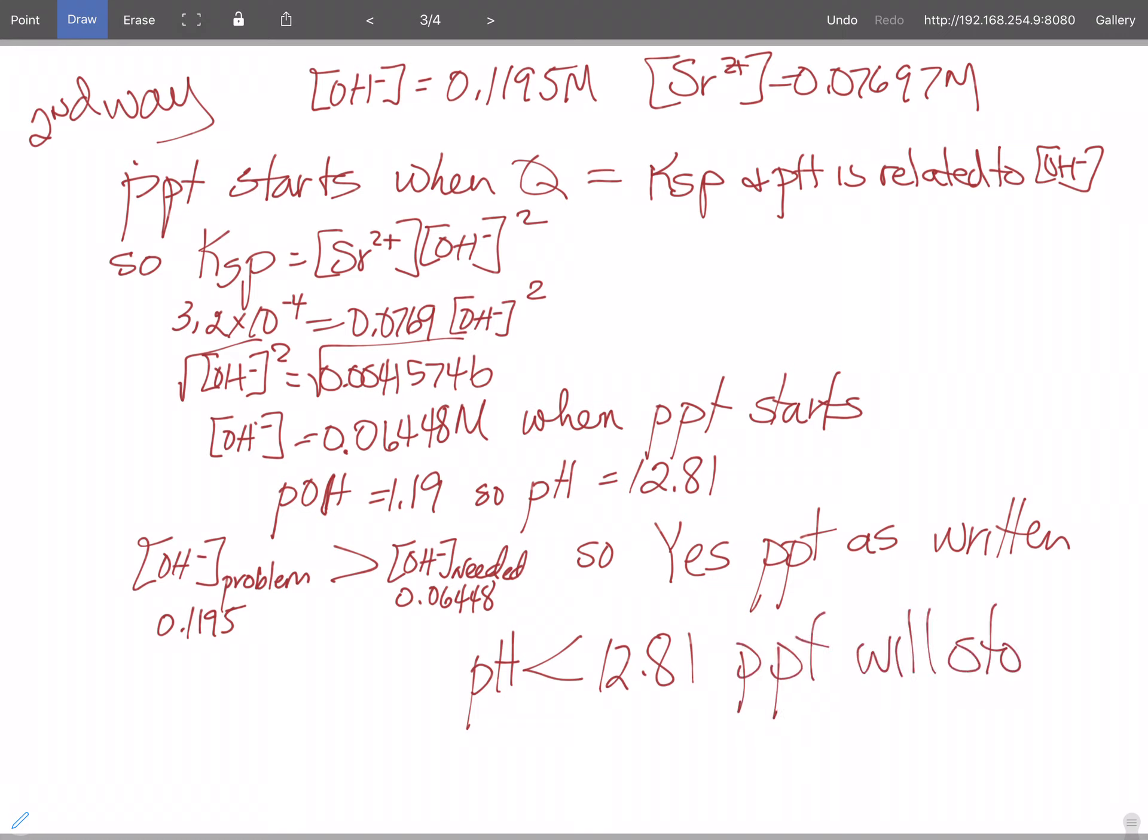So if you'll notice, you're getting the exact same numbers. You're just coming at it from different sides of the coin. You're either starting with the amounts given and solving for Q and relating it to Ksp, or you're starting with the metal that is not the variable to find out what the hydroxide ion concentration should be so that you can calculate it forward or backwards.